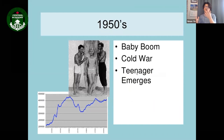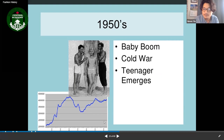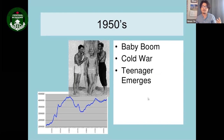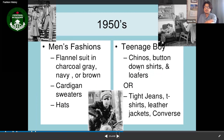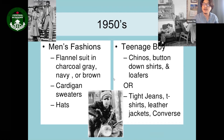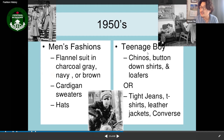After World War Two, the 1950s brought the Cold War but also a period of relative peace, leading to the baby boom — lots of children. Teenagers emerged as a distinct consumer group. Men's fashion included flannel suits in charcoal gray, navy, and brown, cardigan sweaters, and hats. Teenage boys wore chinos, button-down shirts, and loafers.